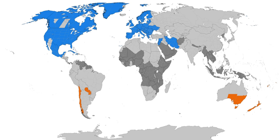The United Kingdom used DST first on May 21, 1916. U.S. retailing and manufacturing interests led by Pittsburgh industrialist Robert Garland soon began lobbying for DST, but they were opposed by railroads. The U.S.'s 1917 entry to the war overcame objections, and DST was established in 1918. The war's end swung the pendulum back — farmers continued to dislike DST, and many countries repealed it after the war, like Germany itself who dropped DST from 1919 to 1939 and from 1950 to 1979.